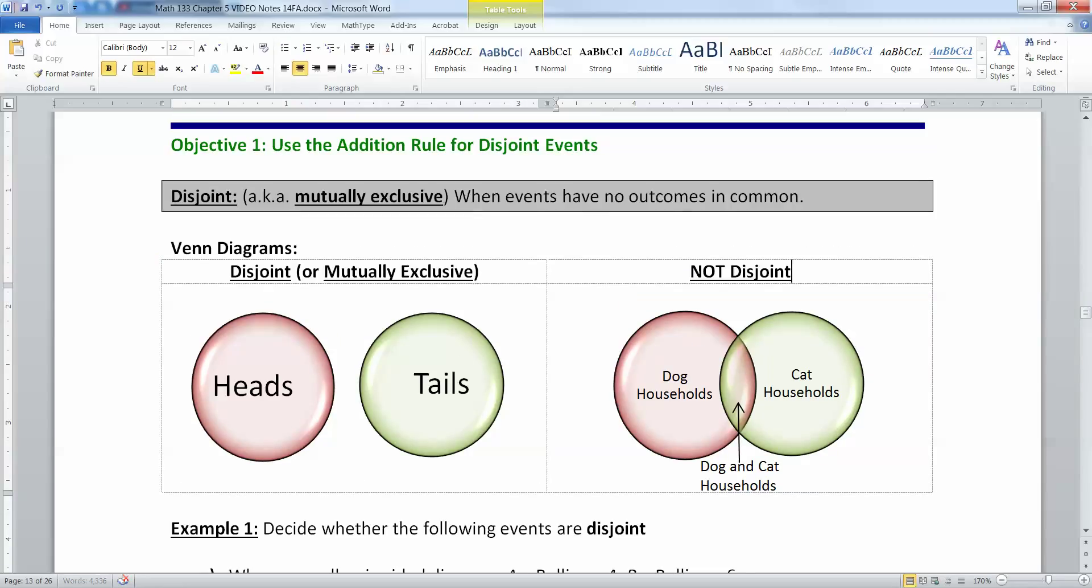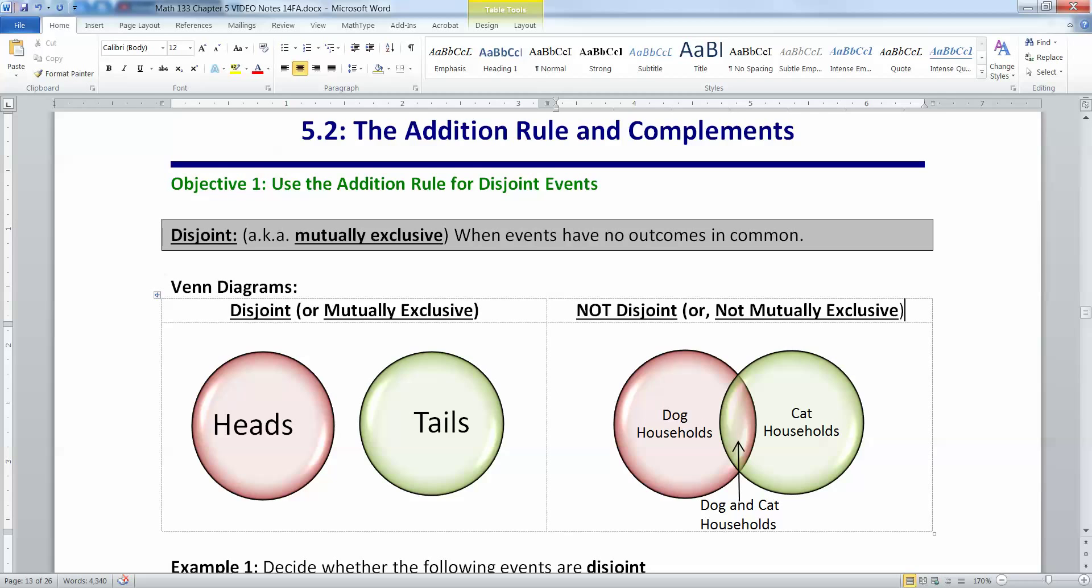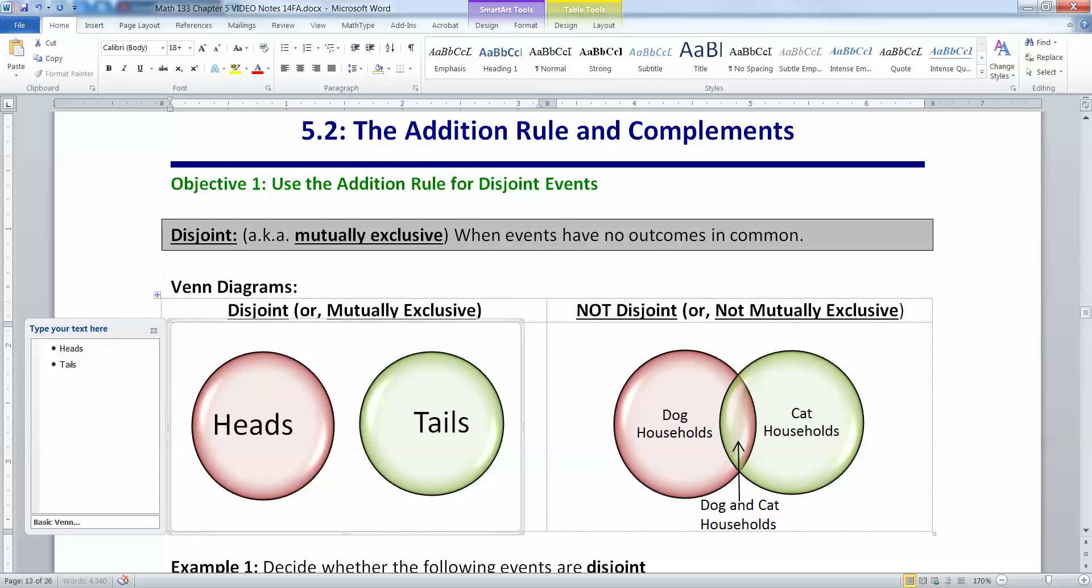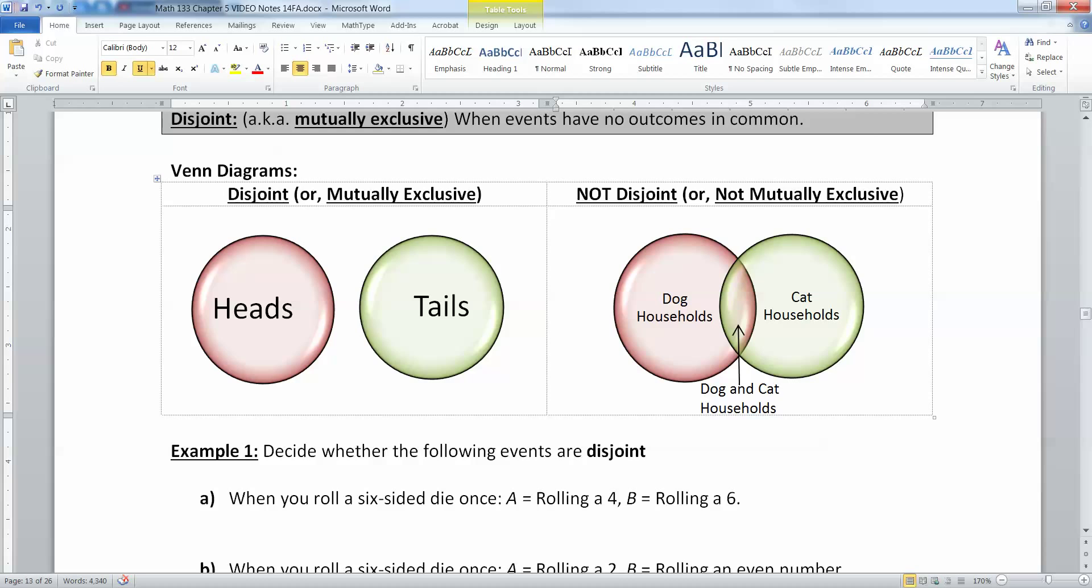Not mutually exclusive. If I know you have a dog in my house, it doesn't mean that automatically you know I don't have a cat. And vice versa, if you know I have a cat, it doesn't mean that I don't have a dog.